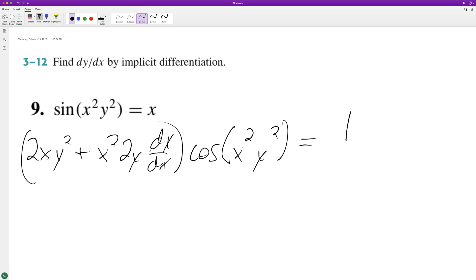We end up with 2x squared y dy/dx equals 1 over cosine of x squared y squared. Now we can subtract this component, so we end up with minus 2xy squared.